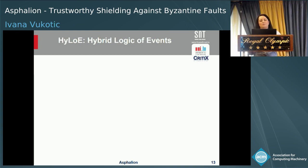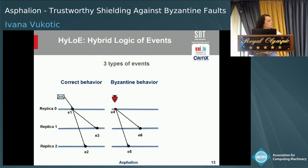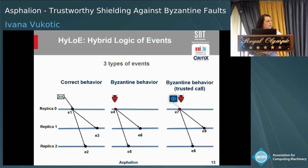One of the most fundamental concepts for reasoning about distributed systems is the concept of an event — a point in space and time when something happens. To support reasoning about hybrid fault-tolerant protocols, our model supports three types of events: events where nodes follow the specification (e.g., event E1); events corresponding to arbitrary behavior (e.g., event E4), where we have no knowledge of what happened; and events caused by arbitrary behavior where a trusted component was called (e.g., event E7), where we can only rely on knowledge gained by the trusted component.